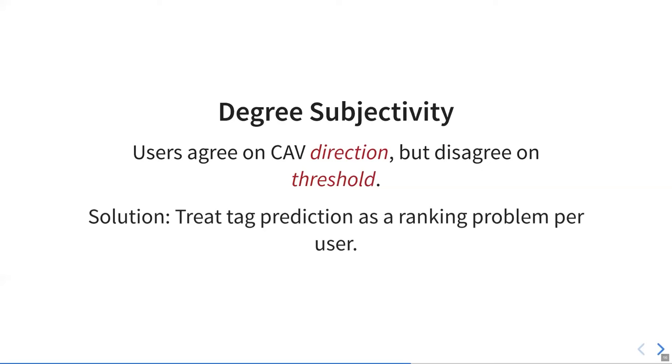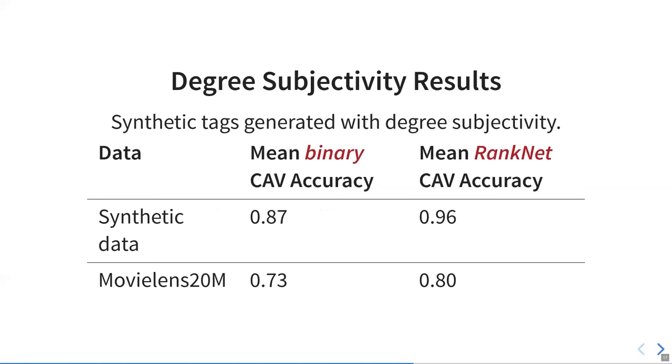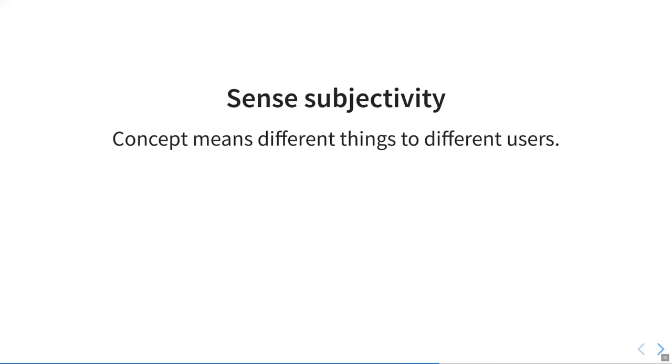When we use synthetic tags generated with degree subjectivity, we do improve our synthetic data prediction performance by quite a bit. In MovieLens, unfortunately, we don't have ground truth data, but we do explore a bit on what types of concepts appear to be degree subjective in our paper.